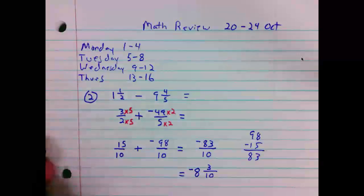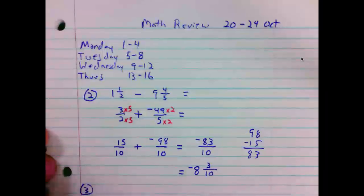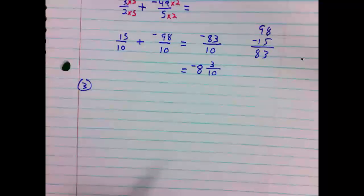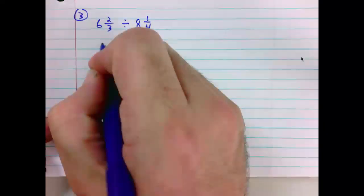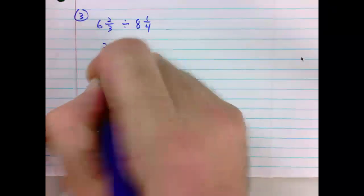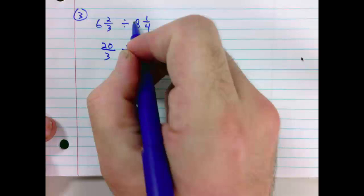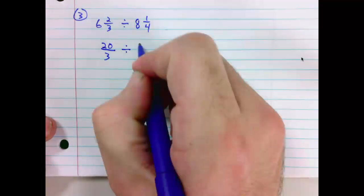Number 3. 6 and 2 thirds divided by 8 and 1 fourth. Again, we will convert both of these mixed numbers into improper fractions. 6 times 3 is 18, plus 2 is 20. 20 over 3. Keeping my divide. 8 times 4 is 32, and 1 is 33. 33 over 4.